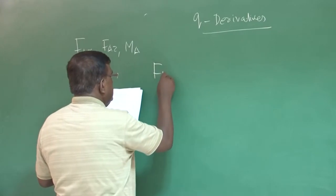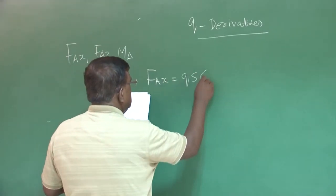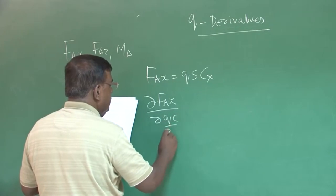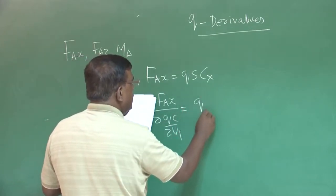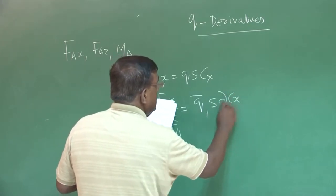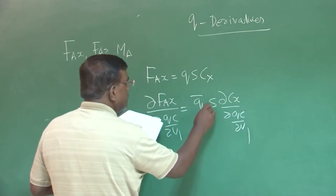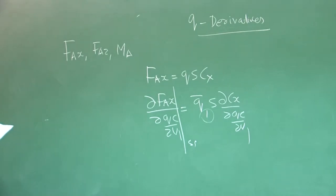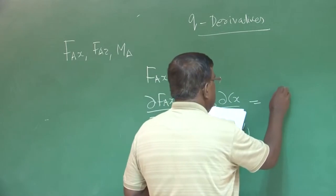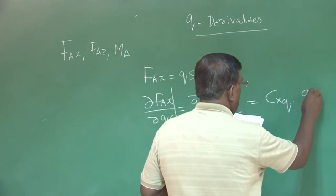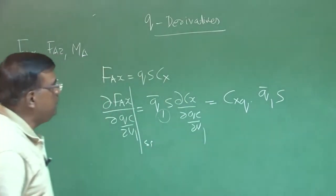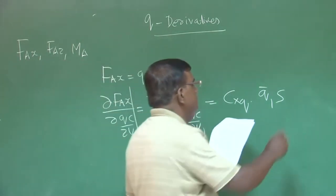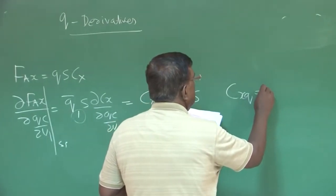So, I can easily write FAx is equal to Qs Cx. So, dFAx by dQc by 2u1 will be equal to Q1 bar s dCx by dQc by 2u1. This one again, because you have to evaluate this at steady state. So, this I can write as Cx_q into Q1 s. Cx_q means dCx by dQc by 2u1. And for small angle,